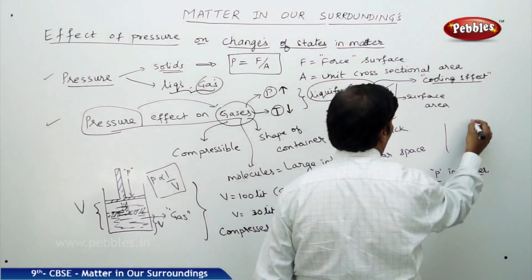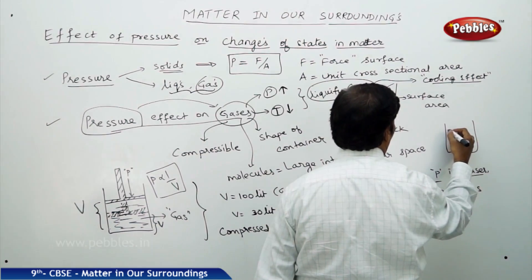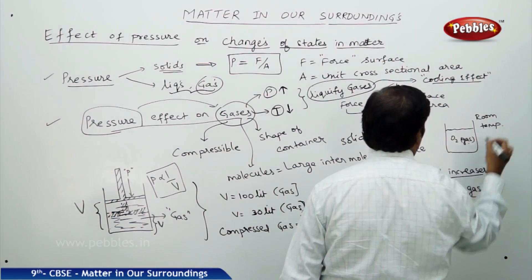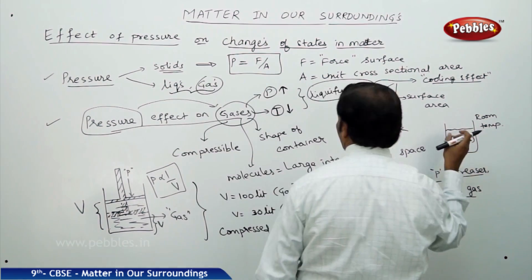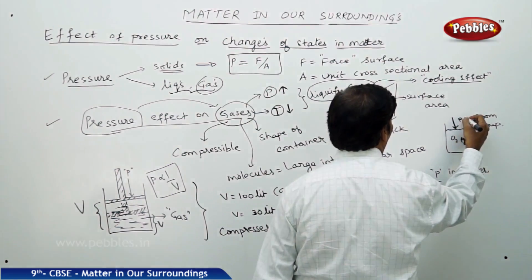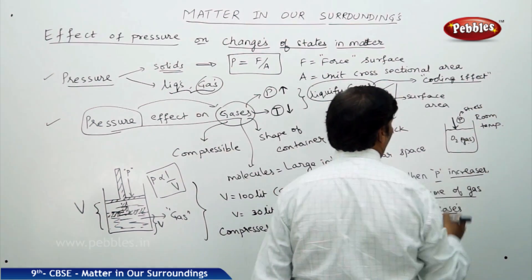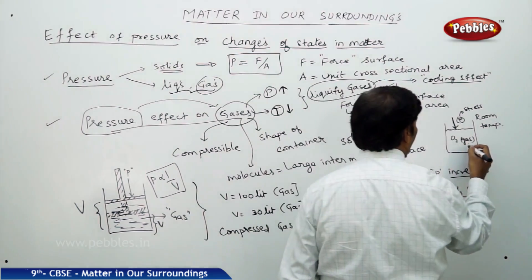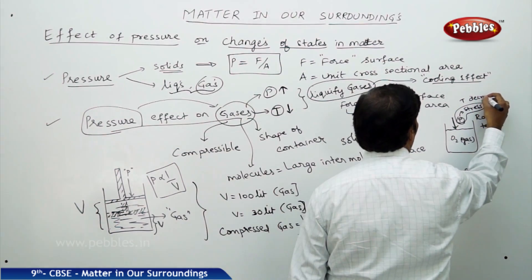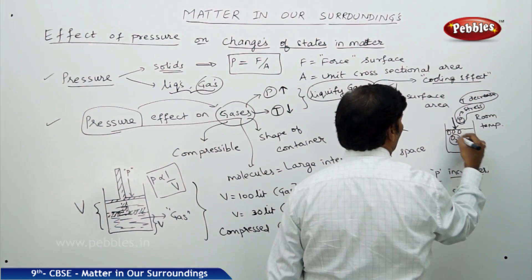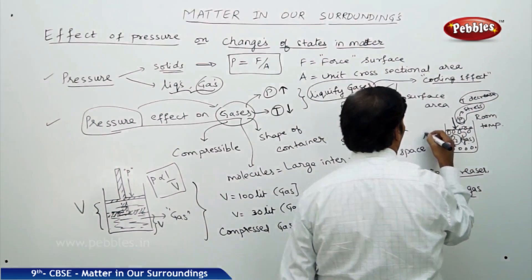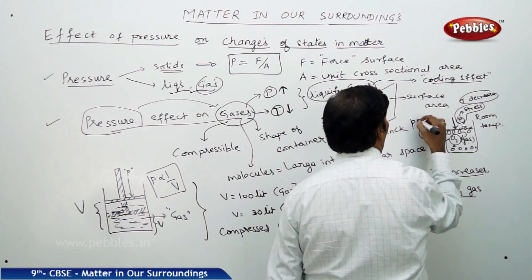One experiment we can do: take O2 gas at room temperature. If you subject it to increased pressure — pressure in the form of stress — due to the increase in pressure, the temperature decreases. You find that there is a bubbling action taking place. These O2 molecules give off bubbles, and the oxygen gas becomes a liquid. Once it becomes liquid, it turns to a pale blue color.